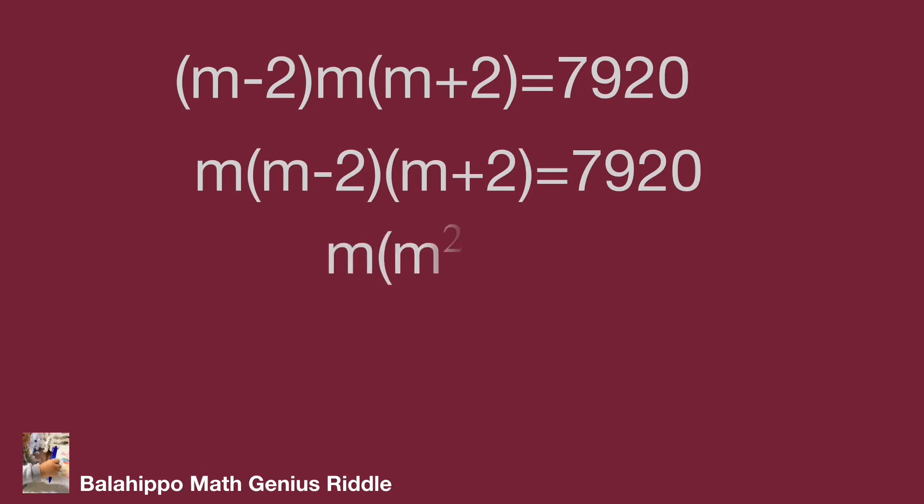Adjust to m multiply quantity m squared minus 4 equal to 7920. Then expand the equation to m cubed minus 4m equal to 7920. We can find the value of m.